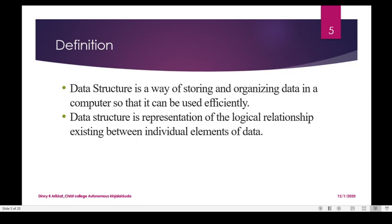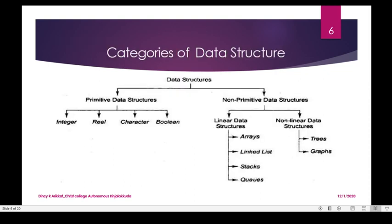Data structure is a set of programs and set of algorithms. This algorithm is defined by how we program it. Data structure is a way of storing and organizing data in a computer so that it can be used efficiently, and it is not a programming language. Data structure is classified into two main items: primitive data structure and non-primitive data structure. Primitive data structure is used in programming languages — we use data types such as integer, real, character, and boolean.